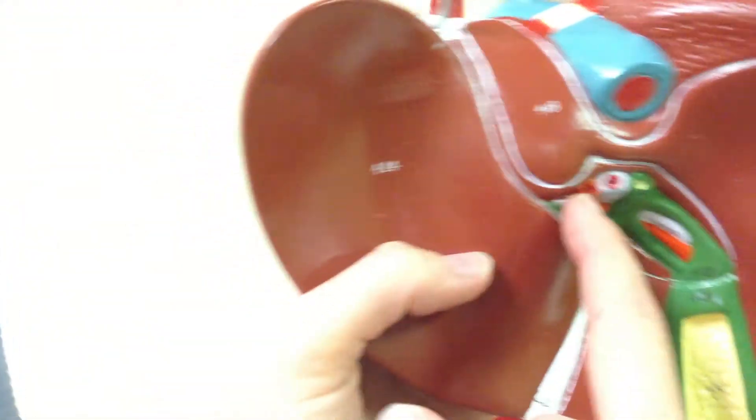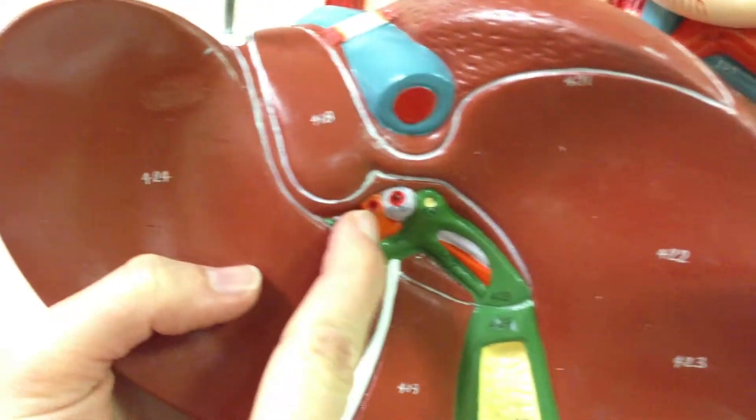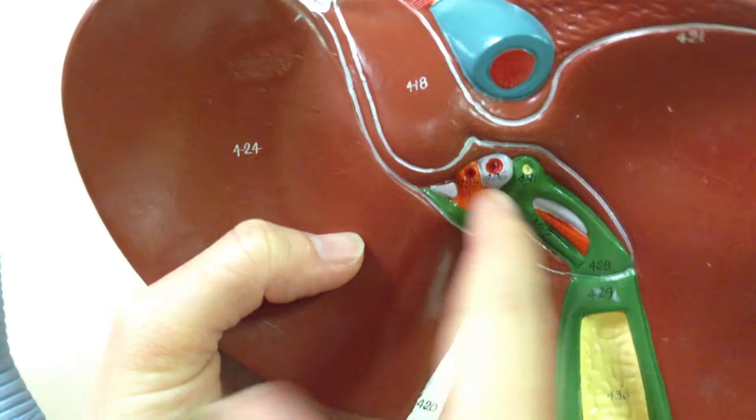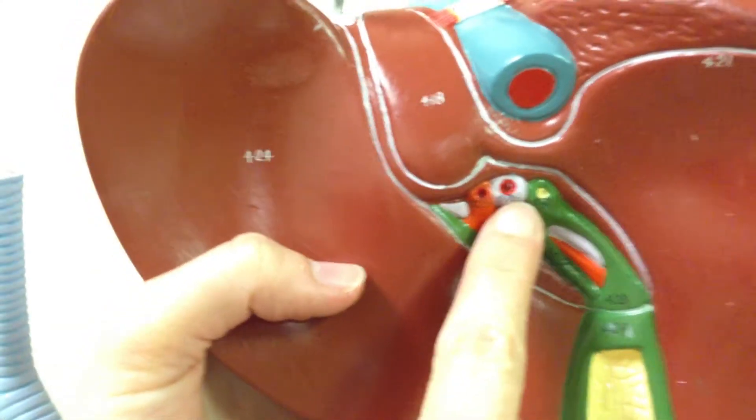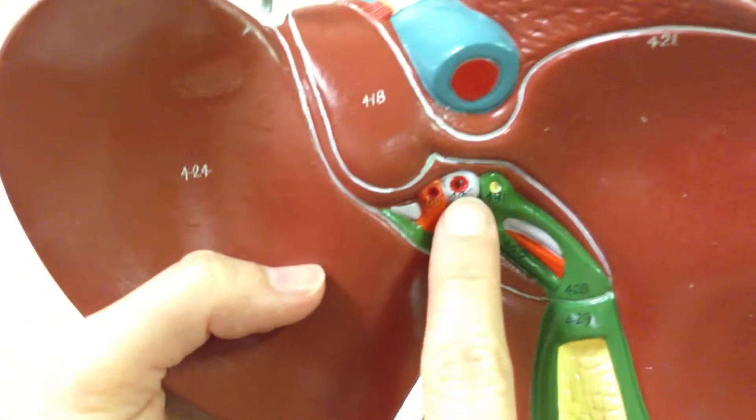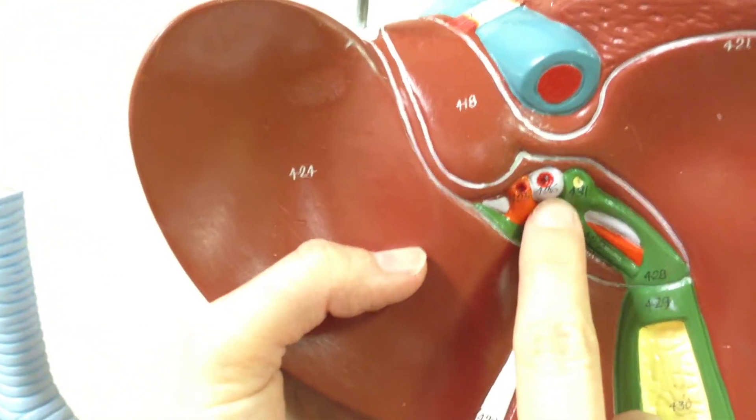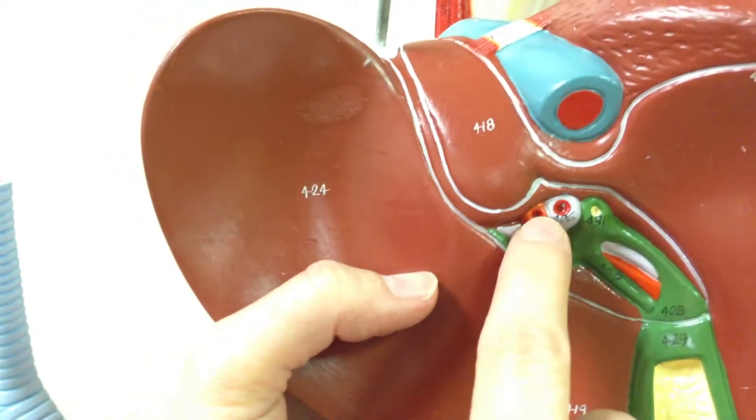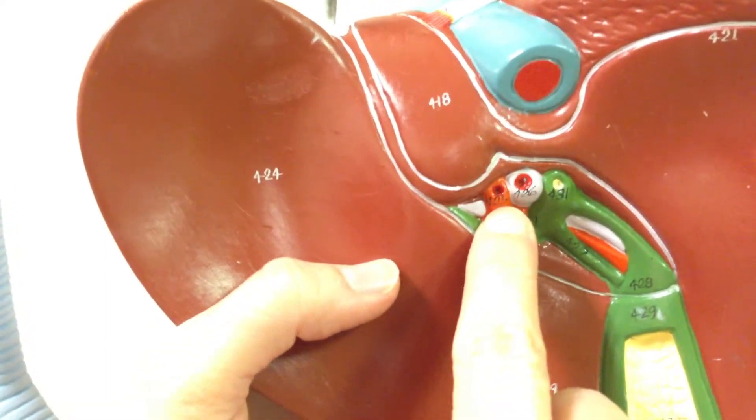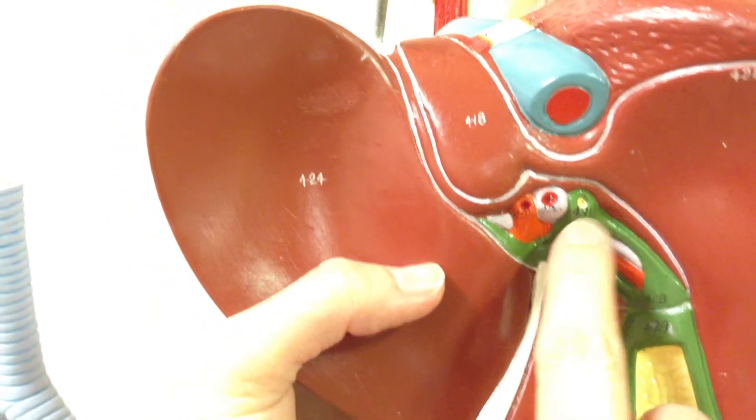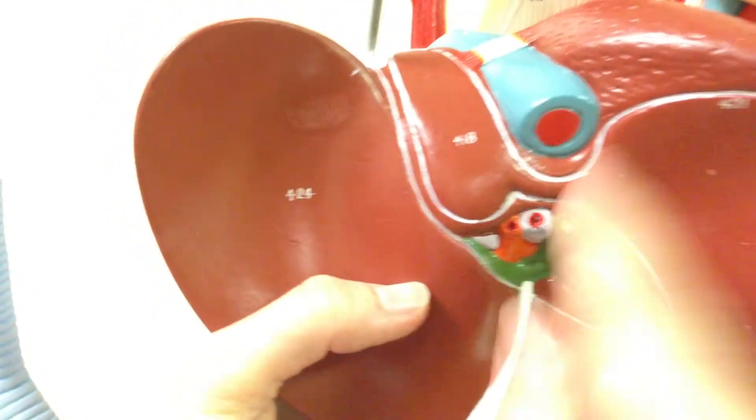So the one that is red right here is the hepatic artery proper, and then the one that's blue-looking, that is the hepatic portal vein. And the vein is taking unoxygenated blood to the liver to supply the liver and the artery. And then this is the bile duct.